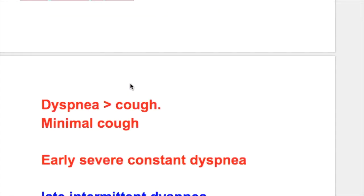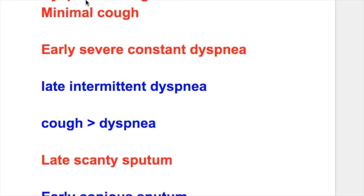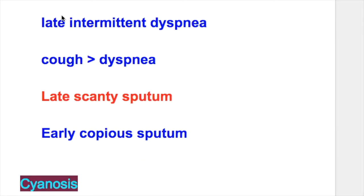Cough and dyspnea: In emphysema, dyspnea is more than cough. Cough is minimal and there is early, severe, constant dyspnea. Whereas in bronchitis, there is late intermittent dyspnea, but cough is more than dyspnea, with early onset and copious sputum. Whereas in emphysema, there is late scanty sputum.